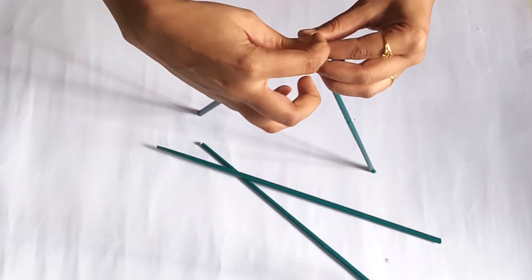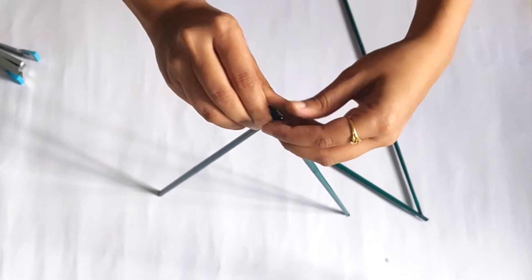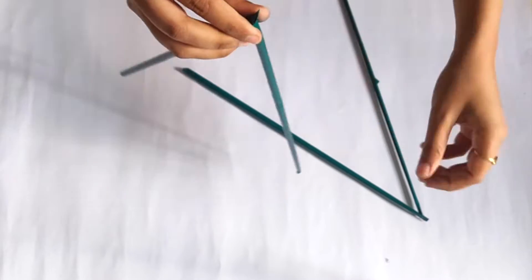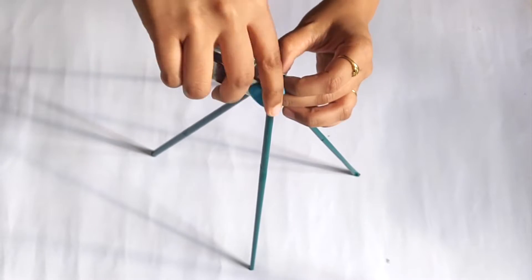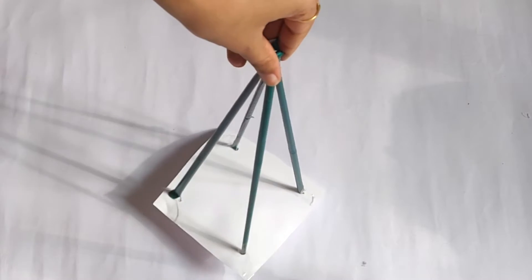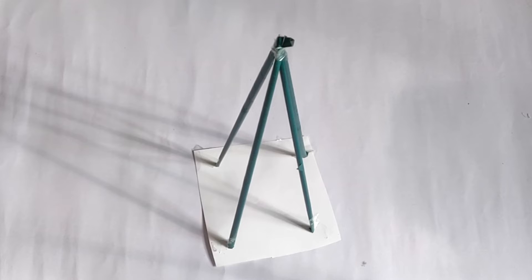Then I took two pipes and secured it with a stapler. Repeat the same process for other two pipes. Then again take these two V-shaped pipes and secured it with a stapler. At the bottom, I stuck a sheet paper to give the structure proper support.